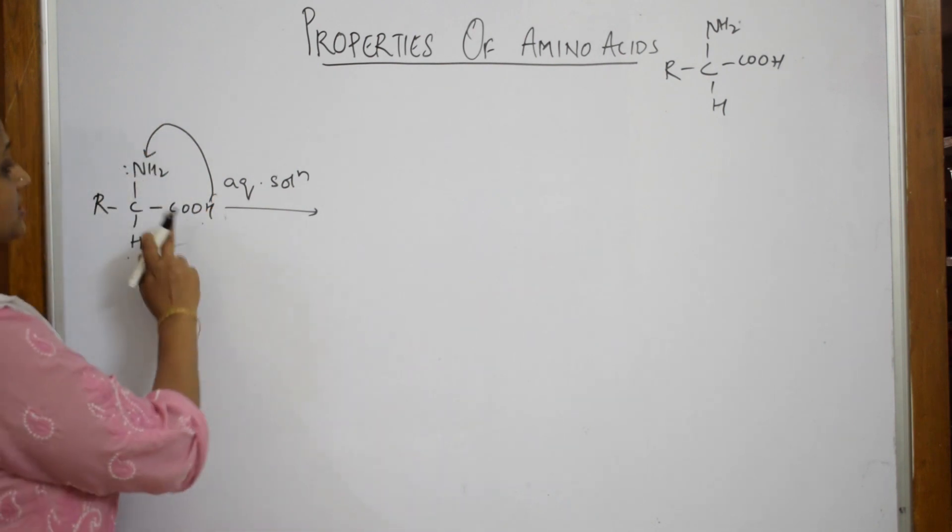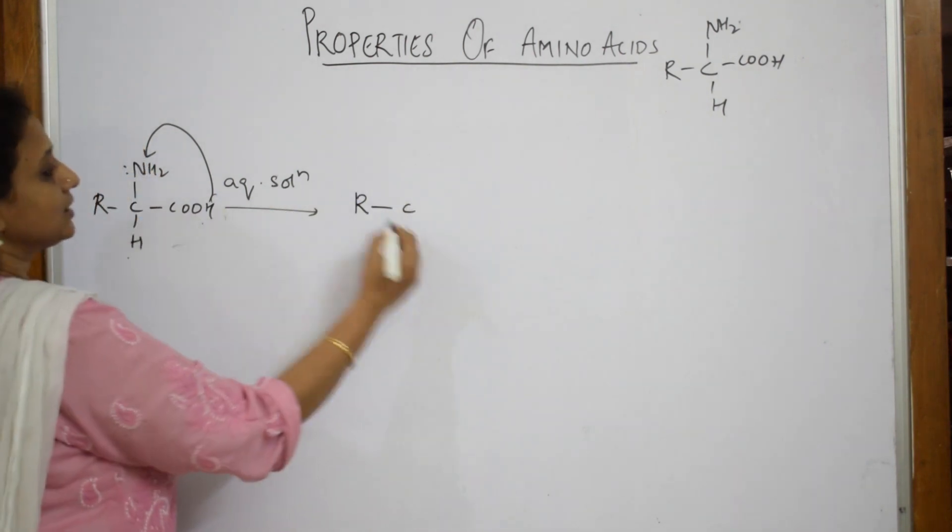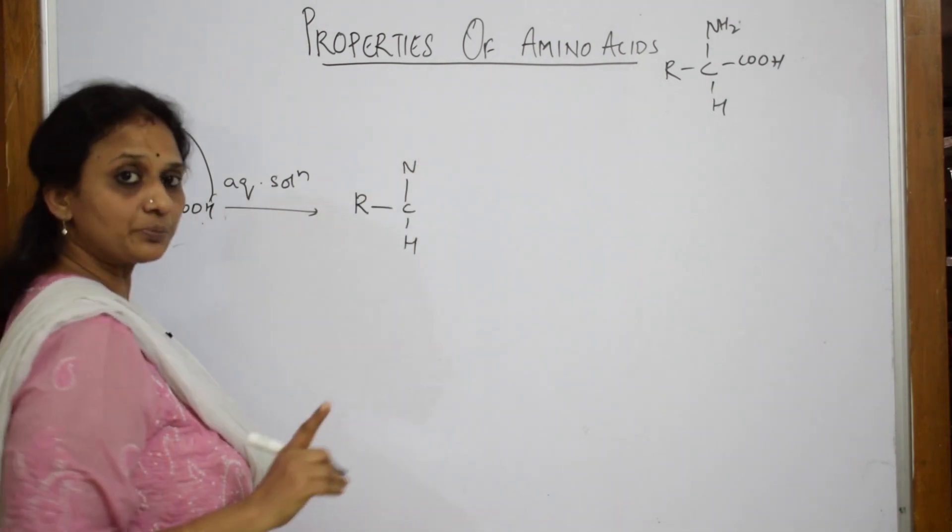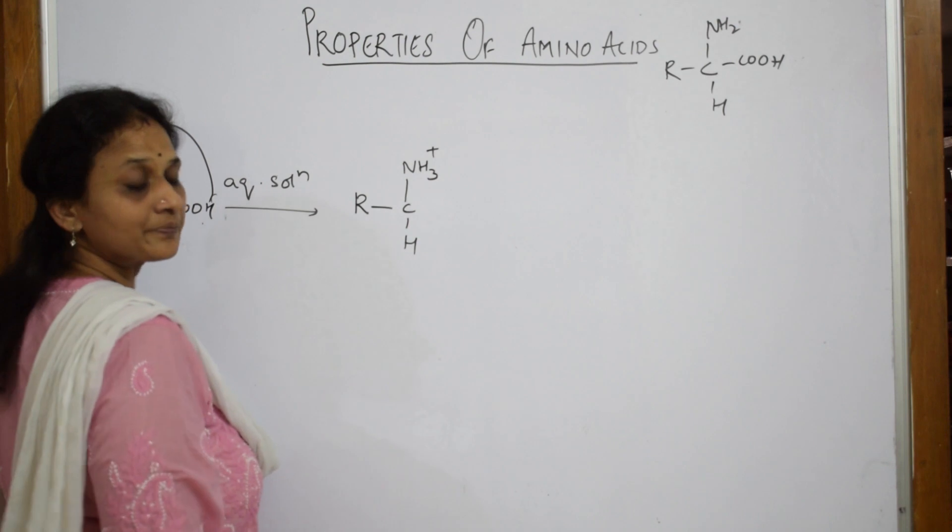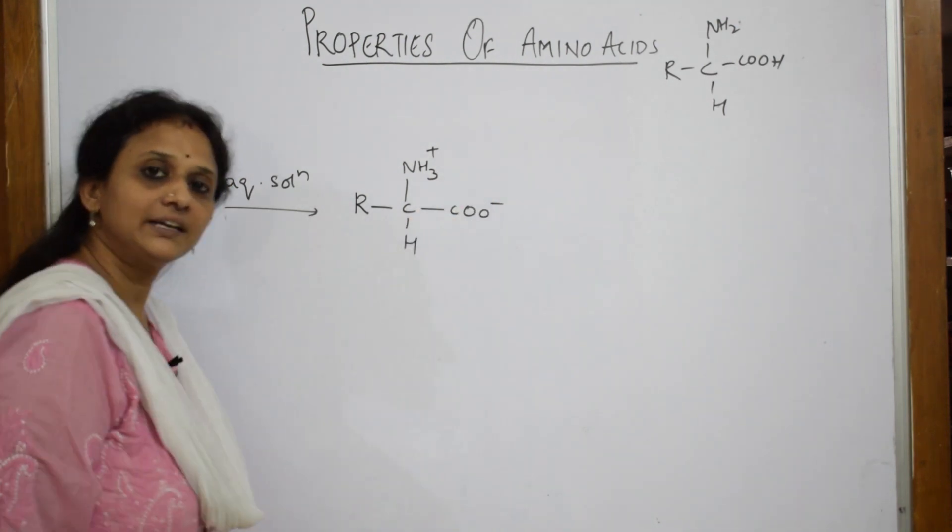How does this amino acid look now? It looks like this: R, C, your hydrogen is still here, and it has accepted one proton. So this becomes NH3 plus and what will happen to this? This becomes COO minus.